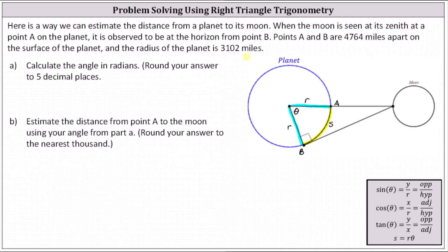The distance 4,764 miles is this yellow distance here, the arc length along the planet, which I've labeled s for arc length, and the radius r is 3,102 miles.